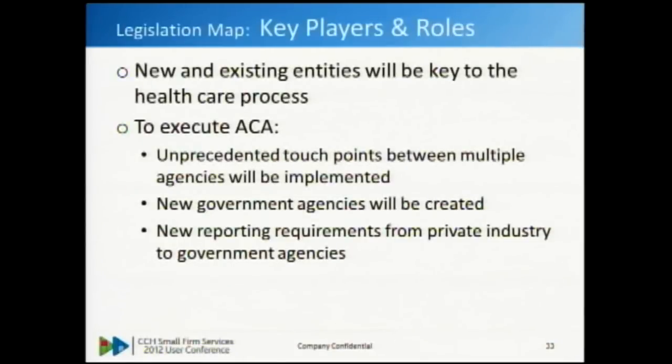Legislation map: ACA has 50 pieces of tax legislation, but that's just the tax component. It is broad, reaching across many different government and private agencies. New and existing entities are going to be key to the process, interacting in unprecedented ways. There will be more data and validation exchanges going on behind the scenes than have ever happened before. New reporting requirements exist between government agencies and from private industry into government agencies for all the reconciliation to make sure mandates, penalties, and different components are being executed and accounted for correctly.